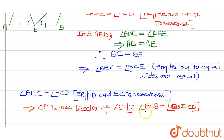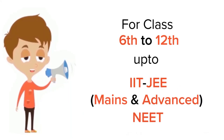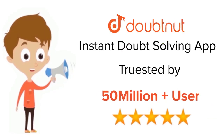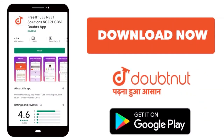Hence our problem is proved. For class 6 to 12, IIT JEE and NEET level, trusted by more than 5 crore students. Download the Doubtnut app today.